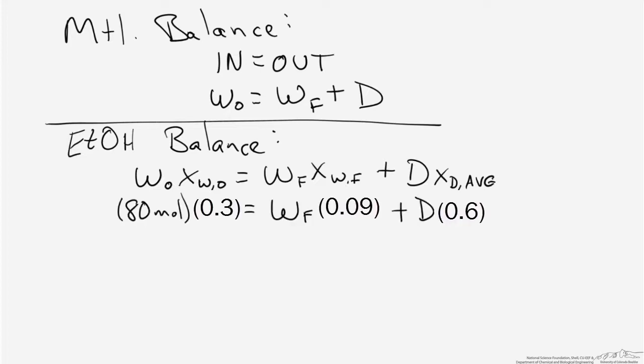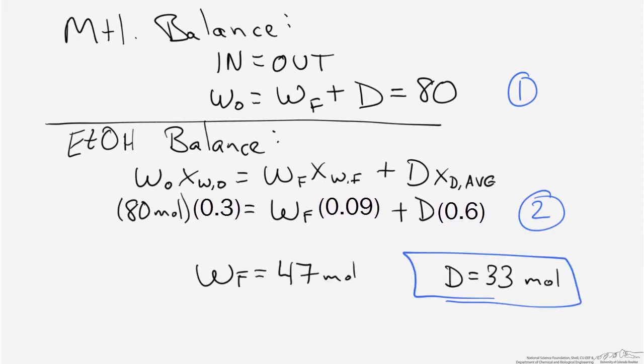When we plug in the values from the problem statement, we have two equations and two unknowns. We can solve those to determine the number of moles that remain in the reboiler at the end of the distillation operation and also the number of moles that emerge as distillate, which was one of the key questions in the problem.